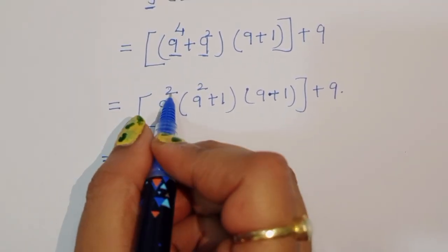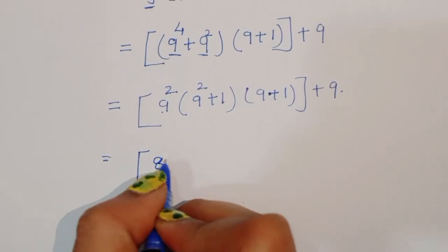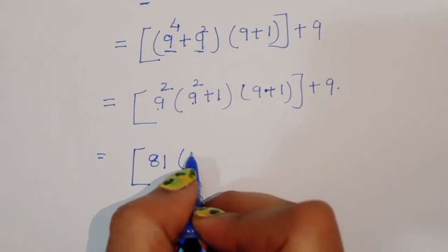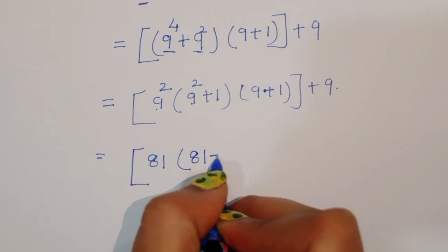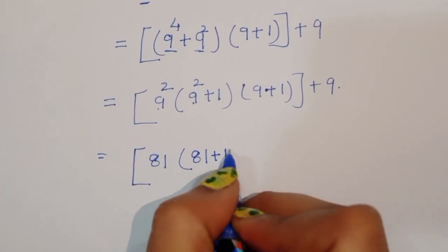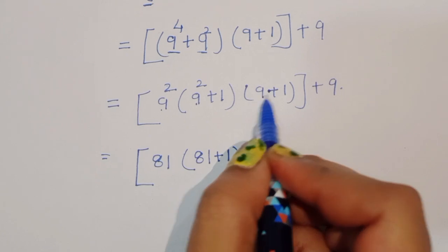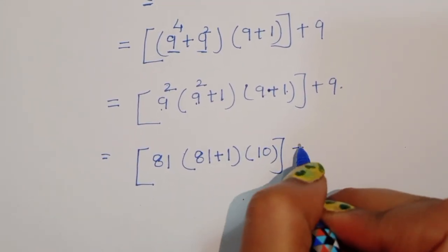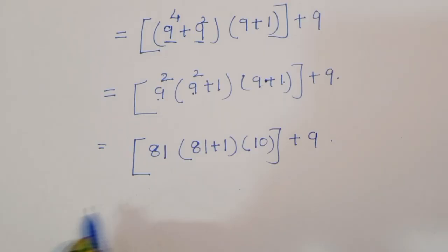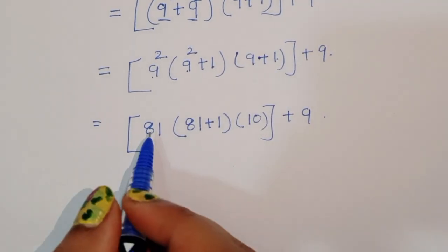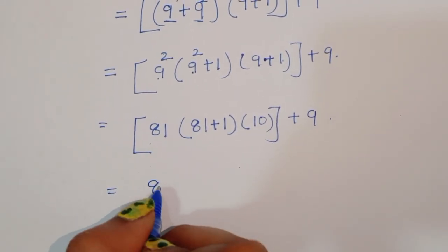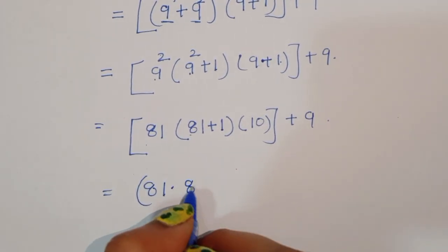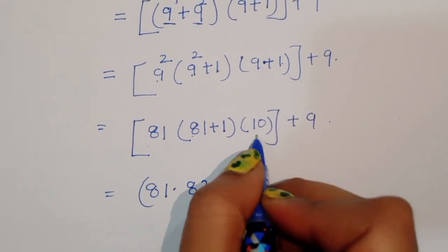That is 9 power 2 means 81. So we can write 9 power 2 that is 81, plus 1, times 9 plus 1 which is 10, plus 9. Now equal to: we can write 81 times 81 plus 1, which is 82, times 10, plus 9.